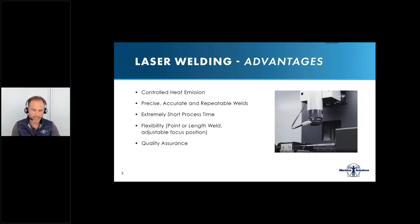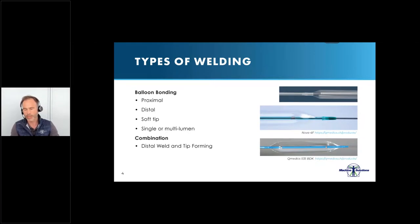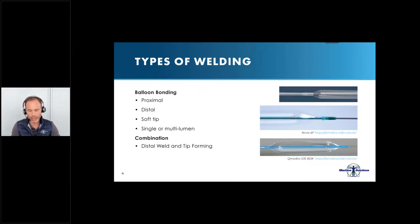The main applications for laser bonding include different types of welding. The main application is welding of the balloon to the catheter — we can weld the proximal side, the distal side, and also do the soft tip. We can do single lumen and multiple lumens. The machine gives you the capability of doing distal weld and tip forming in the same process, as well as doing tapered welds.